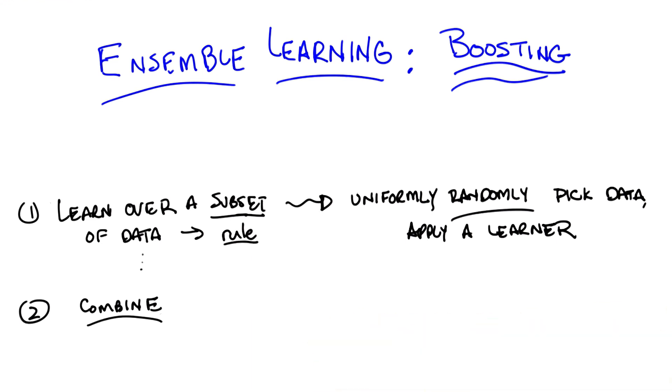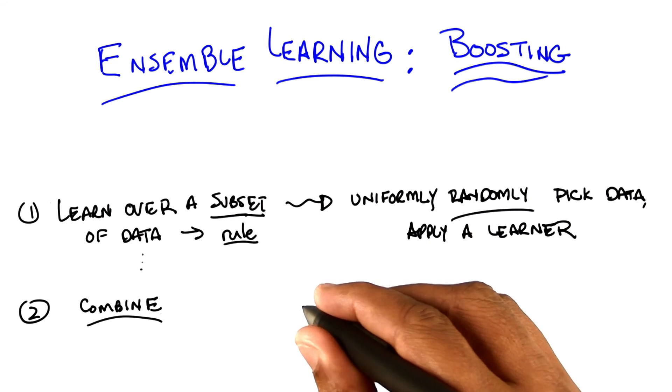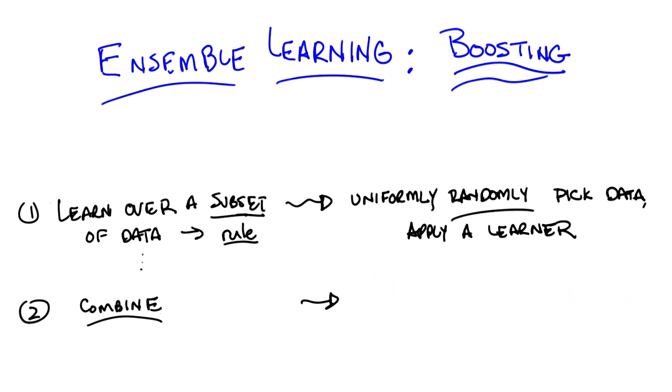So since we're being simple, why don't we try doing something simple for combining? Let's imagine, Michael, that we're doing regression. What's kind of the simplest thing you could do if you have ten different rules which tell you how you should be predicting some new data point? What's the simplest thing you could imagine doing with them?